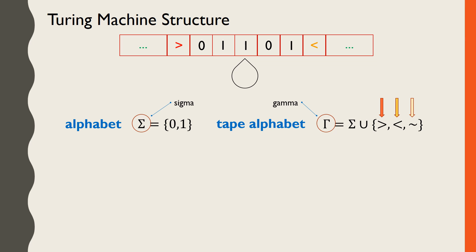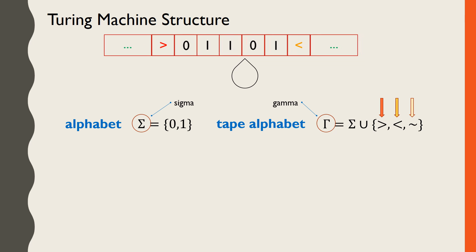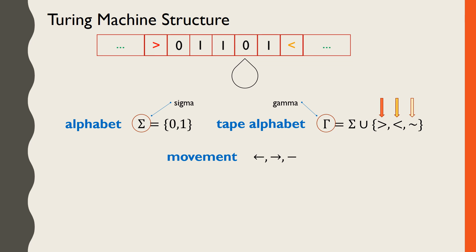The portion of the tape enclosed by the start and end symbols makes up the input. The read-write head is always positioned over exactly one cell and can read a symbol from that cell or write a new symbol in its place. The machine has the ability to move the tape one cell to the left or to the right at any time during operations, in order to reposition the read-write head. It may also elect not to move at all during an operation.